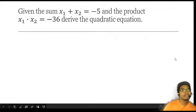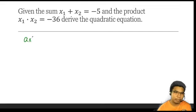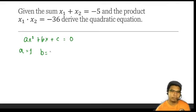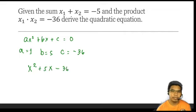Next example: given sum = -5 and product = -36, derive the quadratic equation. Writing the standard form ax² + bx + c = 0, a = 1. The value of b is the additive inverse of the sum: since sum is -5, b = +5. The value of c equals the product: c = -36. Substituting: x² + 5x - 36 = 0. This is our derived quadratic equation.